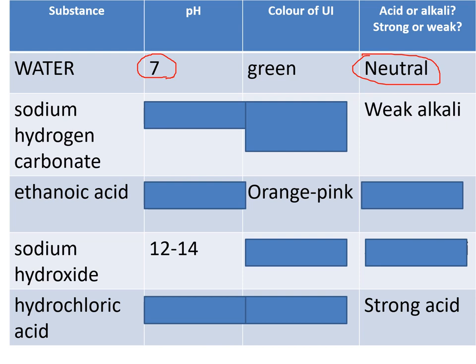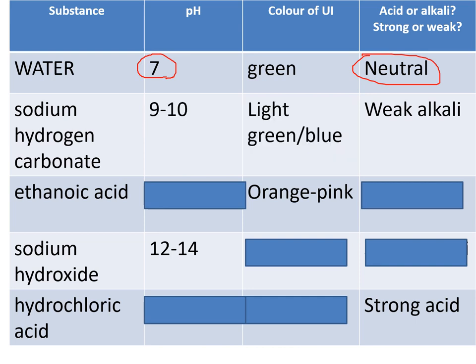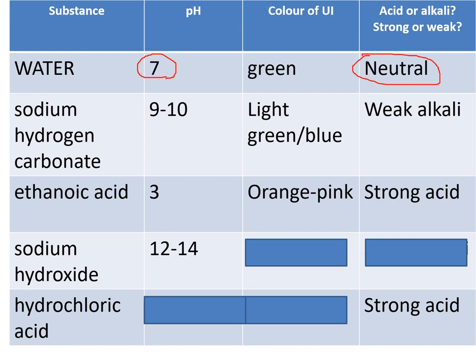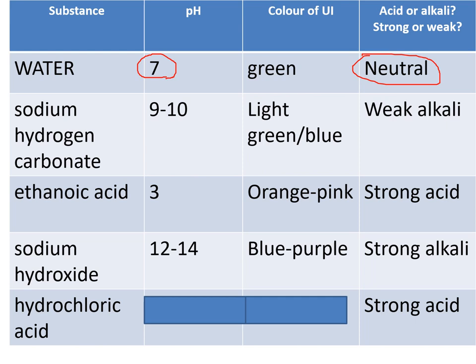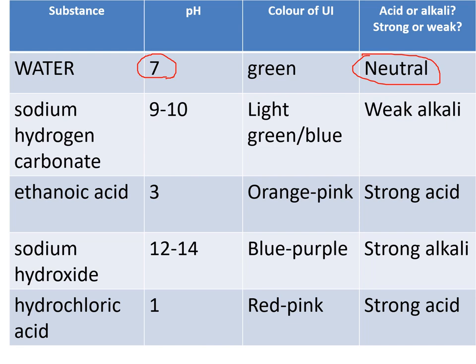Let's look at the answers. Sodium hydrogen carbonate is a weak alkali — light green to blue, pH 9 to 10. Ethanoic acid is orange to pink, about pH 3 — a weak acid. Sodium hydroxide is blue to purple — a strong alkali. Hydrochloric acid is red to pink — a strong acid at pH 1. If you didn't get it right, go back over the slides and have another go.